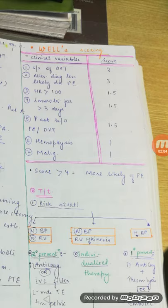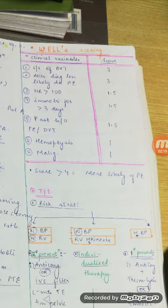Points three and four are related: heart rate more than 100 — tachycardia — scores 1.5. And being immobilized for more than three days also scores 1.5. So your heart is racing but you are bedridden and immobilized for more than three days.